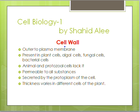First of all, the cell wall is present outside the plasma membrane. Regarding its occurrence, it is present in plant cells, algal cells, fungal cells, and bacterial cells — though the composition differs. Animal and protozoal cells lack the cell wall.